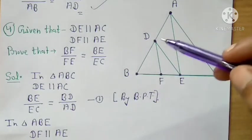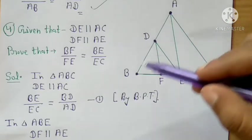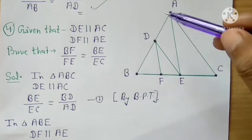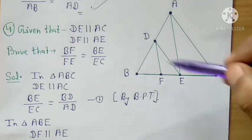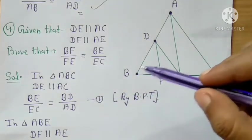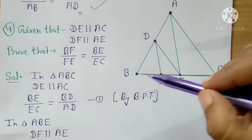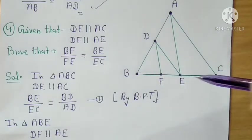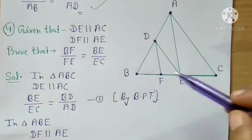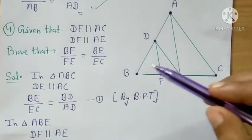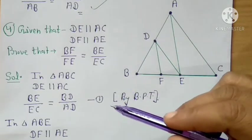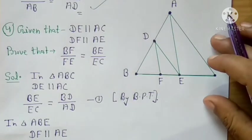Take any triangle — say triangle ABC. In this triangle, DE is parallel to AC. Since this line is parallel to that side, the ratio here equals the ratio there. So BE upon EC equals BD upon AD — equation 1, by BPT.